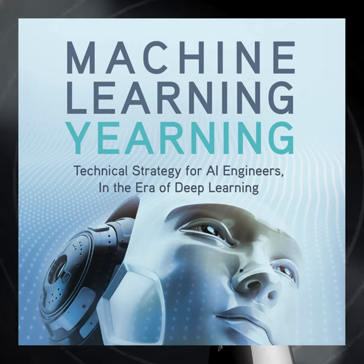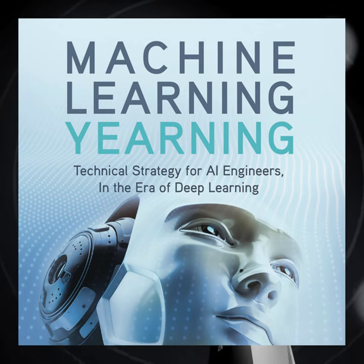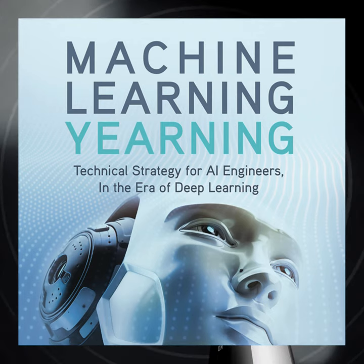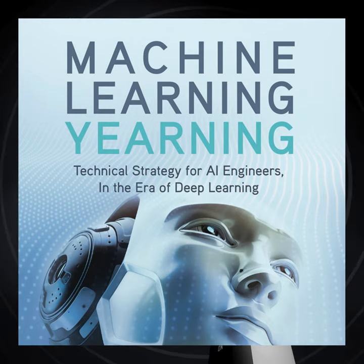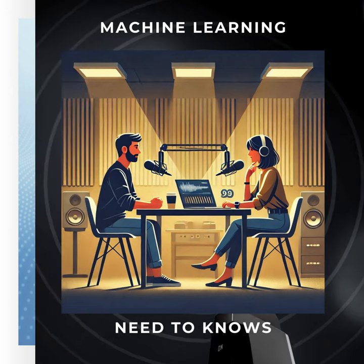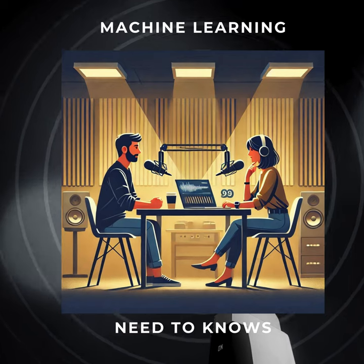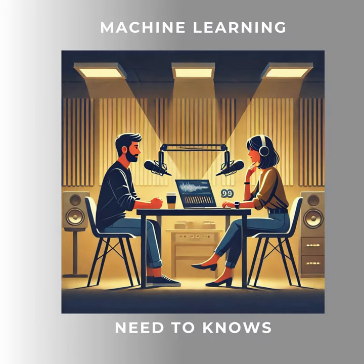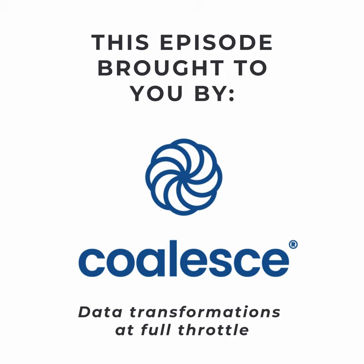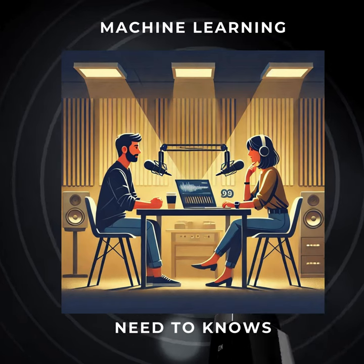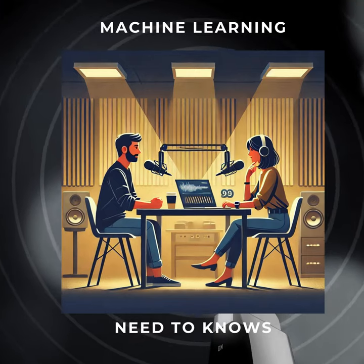When variance is the main culprit — our algorithm is killing it on the training data but choking on the dev set — the most straightforward solution is often the most effective: add more training data. The more examples your algorithm sees, the better it can learn those underlying patterns and avoid getting fixated on the quirks of the training set. We can also use regularization to prevent overfitting, and early stopping — basically hitting the brakes on the training process before it starts overfitting. It's about finding that sweet spot between underfitting and overfitting.